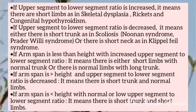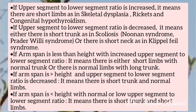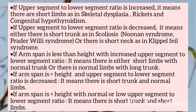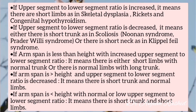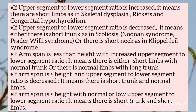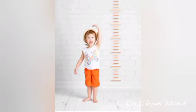If the upper segment to lower segment ratio is increased, it means there are short limbs, as in skeletal dysplasia, rickets, and congenital hypothyroidism. If the ratio is decreased, it means either there is a short trunk as in scoliosis, Noonan syndrome, or Prader-Willi syndrome, or there is a short neck as in Klippel-Feil syndrome. If arm span is less than height with an increased US:LS ratio, there are short limbs with normal trunk or normal limbs with a long trunk. If arm span is greater than height and US:LS ratio is decreased, there is a short trunk with normal limbs. If arm span is less than height with a normal or low US:LS ratio, there is a short trunk and short limbs.